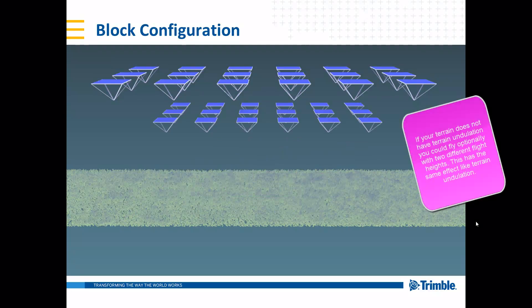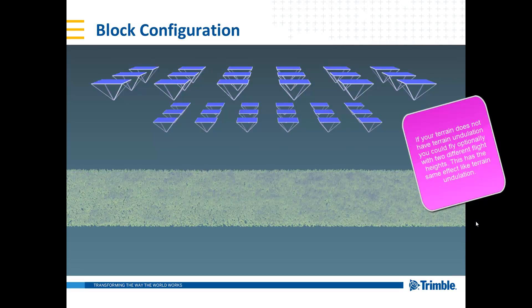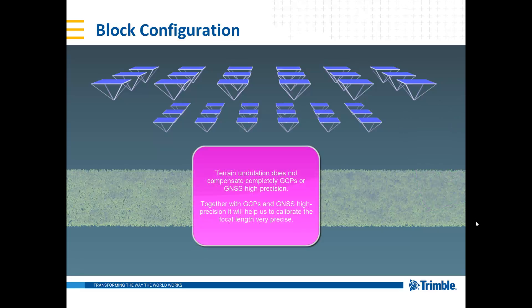If you fly with two different flying heights, we can also establish the focal length better — but unfortunately with zero control points this is still insufficient. What we would need is either precise GNSS data with four to five centimeter accuracy for both flying heights, or control points on the ground. Without any control point, even two different flying heights are not enough for a good block configuration.